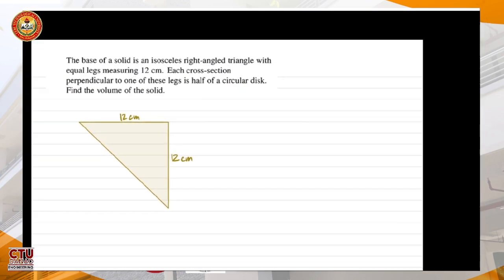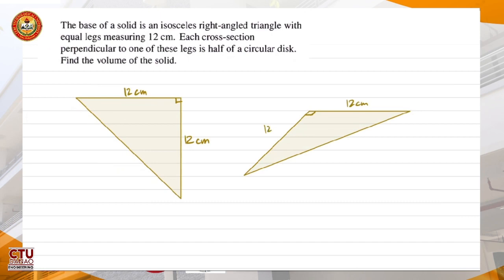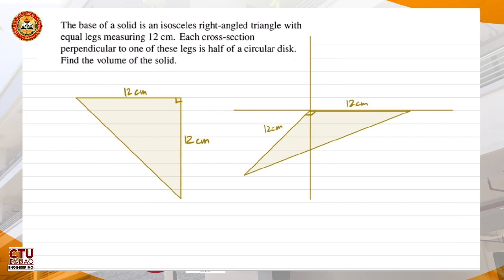If we draw that in three dimensions, these are the two equal legs. This and this. This is the hypotenuse and that is 90 degrees. The 12 centimeters is this and also 12 centimeters is this. Our axes are this axis, vertical axis. Let's name this x-axis, y-axis, and z-axis.